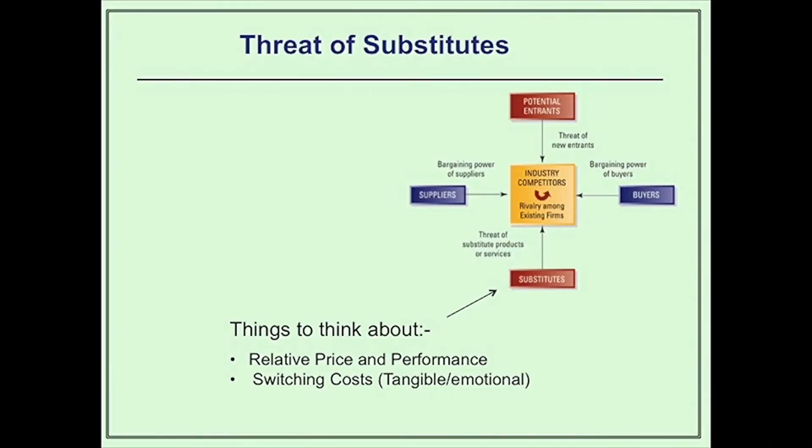Finally, turning to the threat of substitutes: consider the relative price and performance of those substitutes — do they perform to the same level as what the incumbent industry already produces? And are there switching costs between the industry's offering and the substitute? For UK motor insurance, while it is perceived as high-priced with few strong switching costs, there are very few other options as motor insurance is a legal requirement to drive a car. So this force is low.